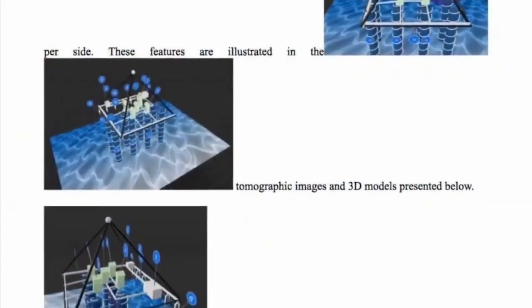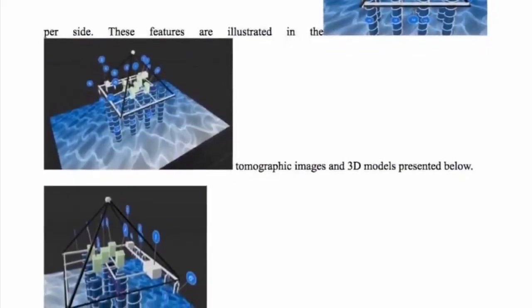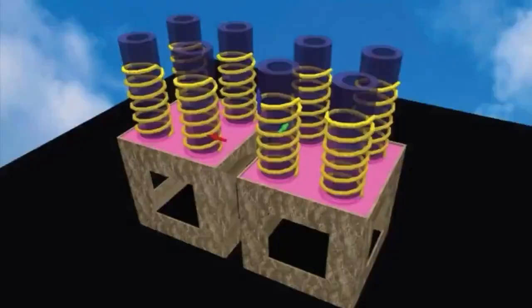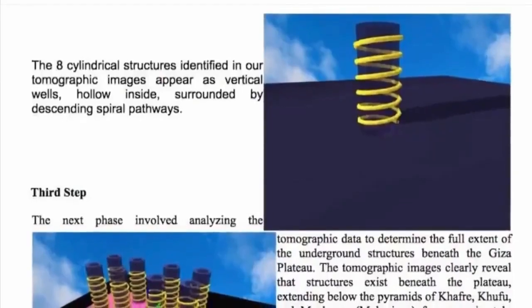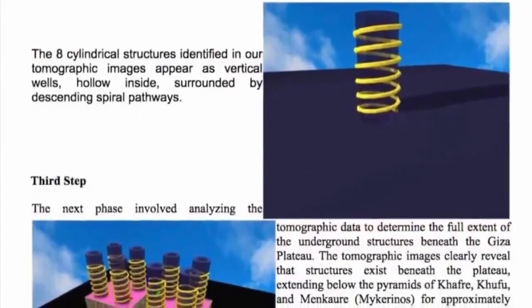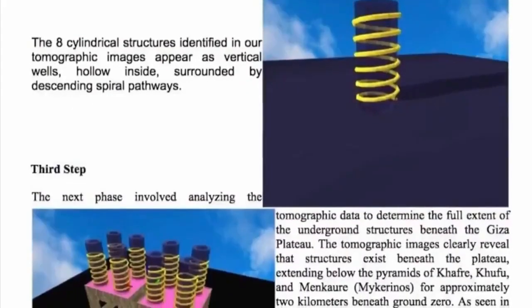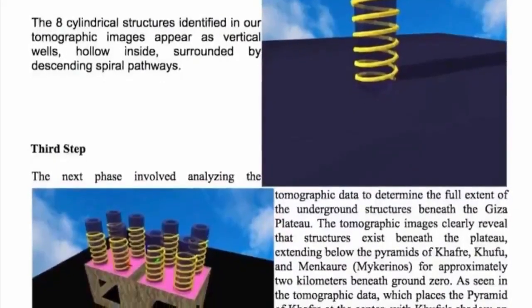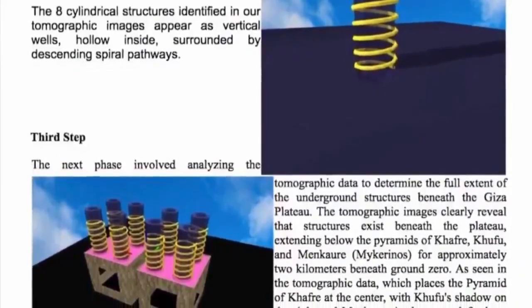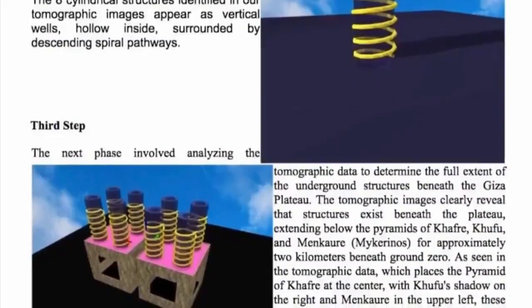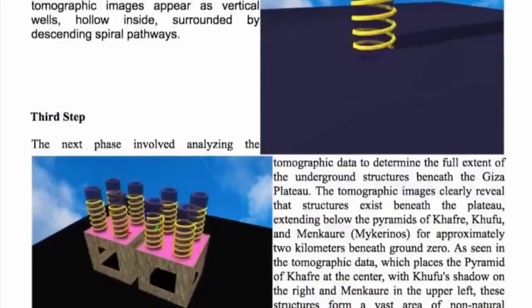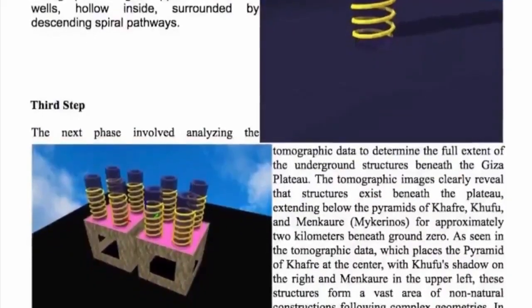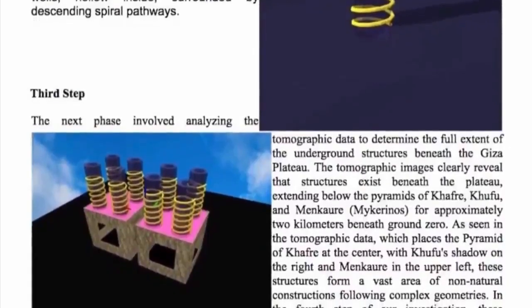And this is how they stumbled upon these, what did you call them, spiral structures? Well, not stumbled upon, exactly. It took years of meticulous data collection and analysis by a dedicated team of geophysicists and archaeologists. Oh, so a whole team. Yeah, at the International Institute for Subterranean Archaeology. Right. So this wasn't just some lucky accident. This was a targeted, well-planned, and executed research project. Absolutely. And they had to deploy a whole network of sensors across the Giza Plateau, capturing these reflected waves from all these different angles. And then all that data had to be processed and interpreted. That must have taken a massive amount of computing power.